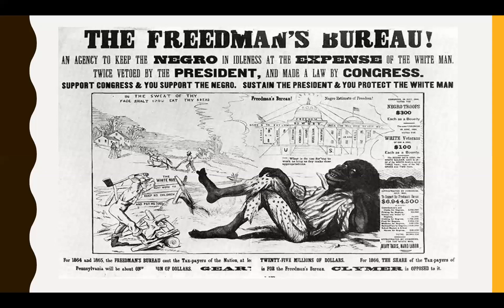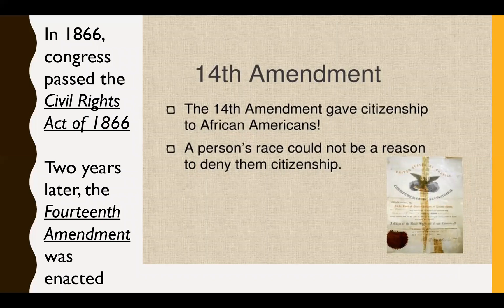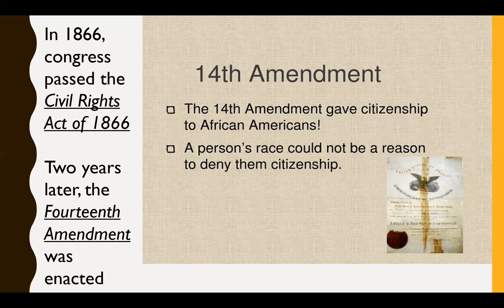Under Radical Reconstruction, Republicans in Congress also implemented the first civil rights act in American history — the Civil Rights Act of 1866 — which declared that formerly enslaved people were citizens and granted them equal protection of the law, including the right to serve on courts. President Johnson, however, was a racist who didn't believe in equal rights for African Americans, and so he vetoed the Civil Rights Act of 1866 and also vetoed the Freedmen's Bureau.